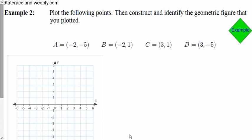For example 2, it's slightly different. We want to plot the following points. So we'll plot the points, and then we'll put the name of it. So here's point A, negative 2, negative 5, right here. I'm going to call that A. B is negative 2, 1. C, negative 2, positive 1 would be up here. So that's B.